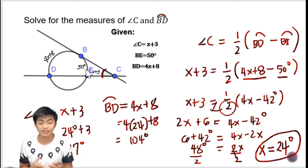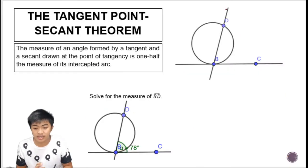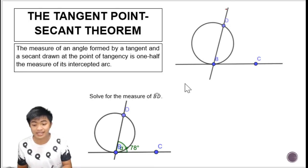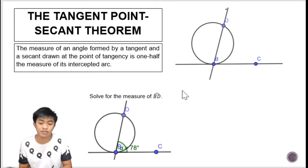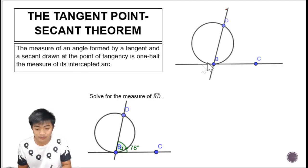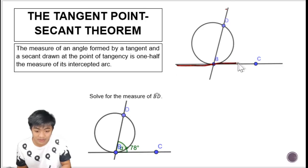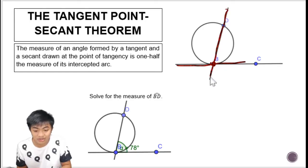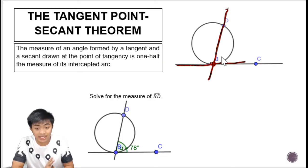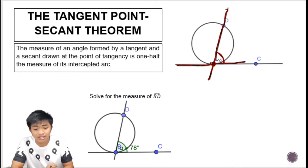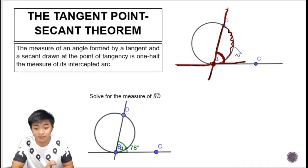Now let's move to the Tangent-Point Secant Theorem. This theorem states that the measure of an angle formed by a tangent and a secant drawn at the point of tangency is one half the measure of its intercepted arc. We have a tangent line with a point of tangency, and the secant also passes through that point. Two angles are formed — one on each side — and if we know the intercepted arc, we just divide its degree measure by 2 to get the angle.